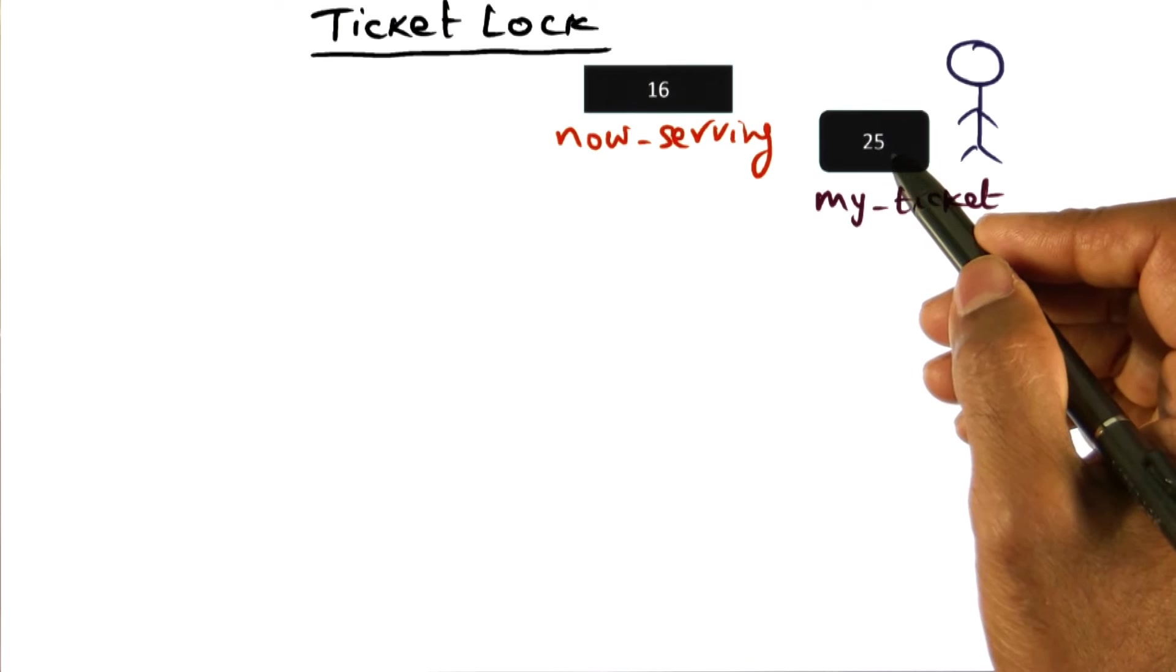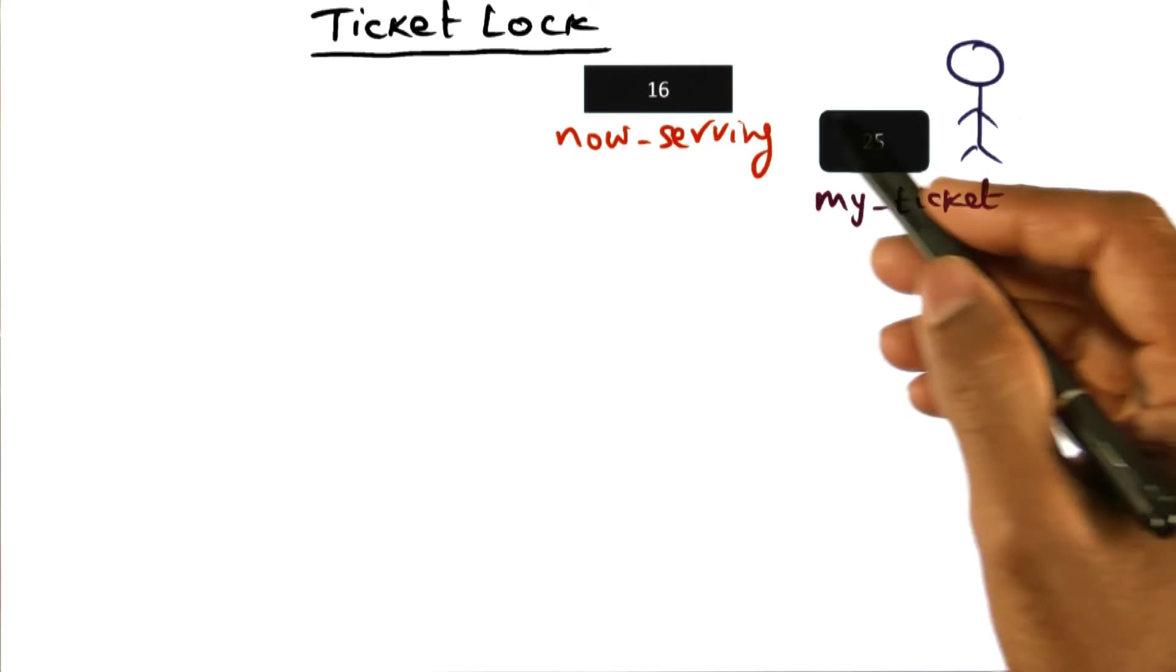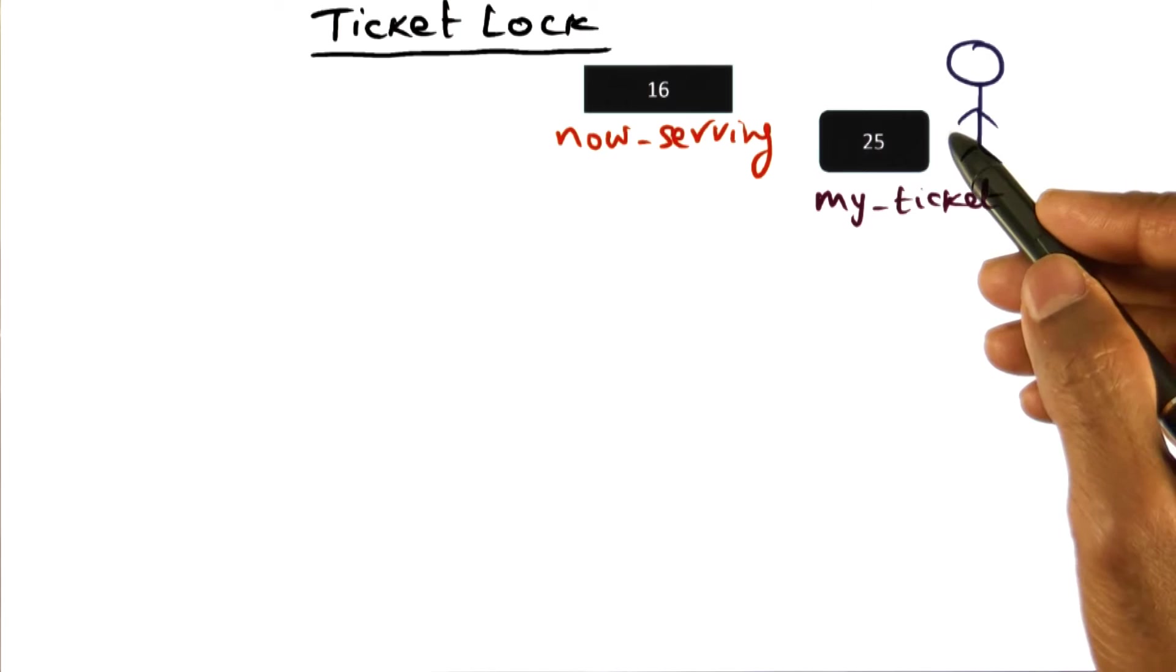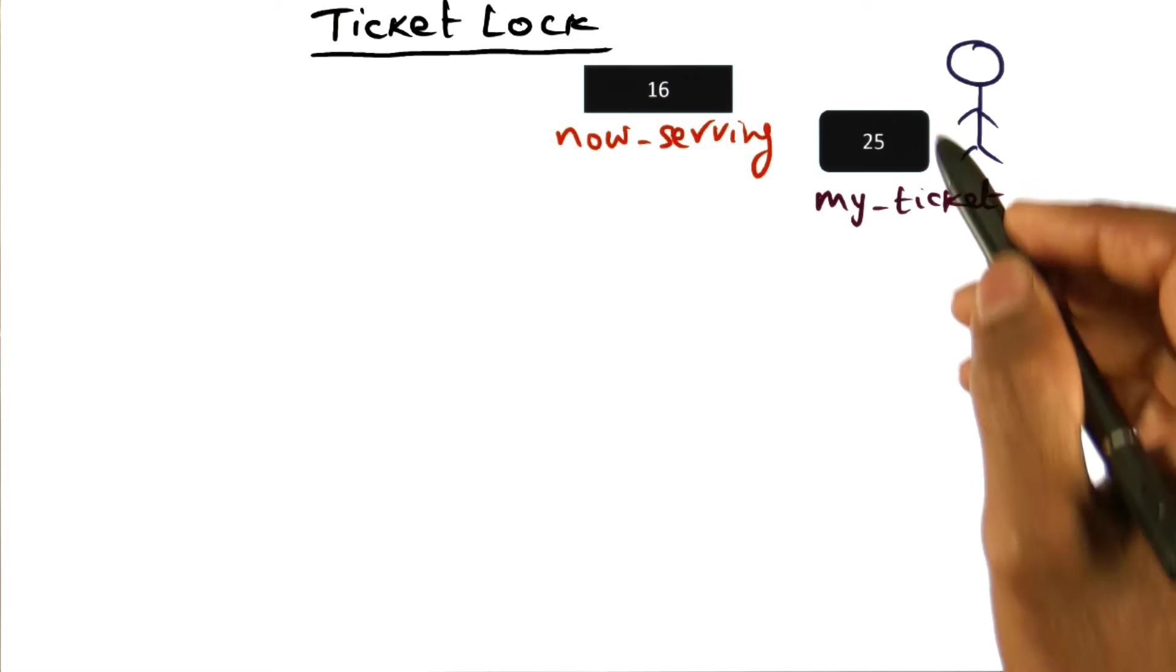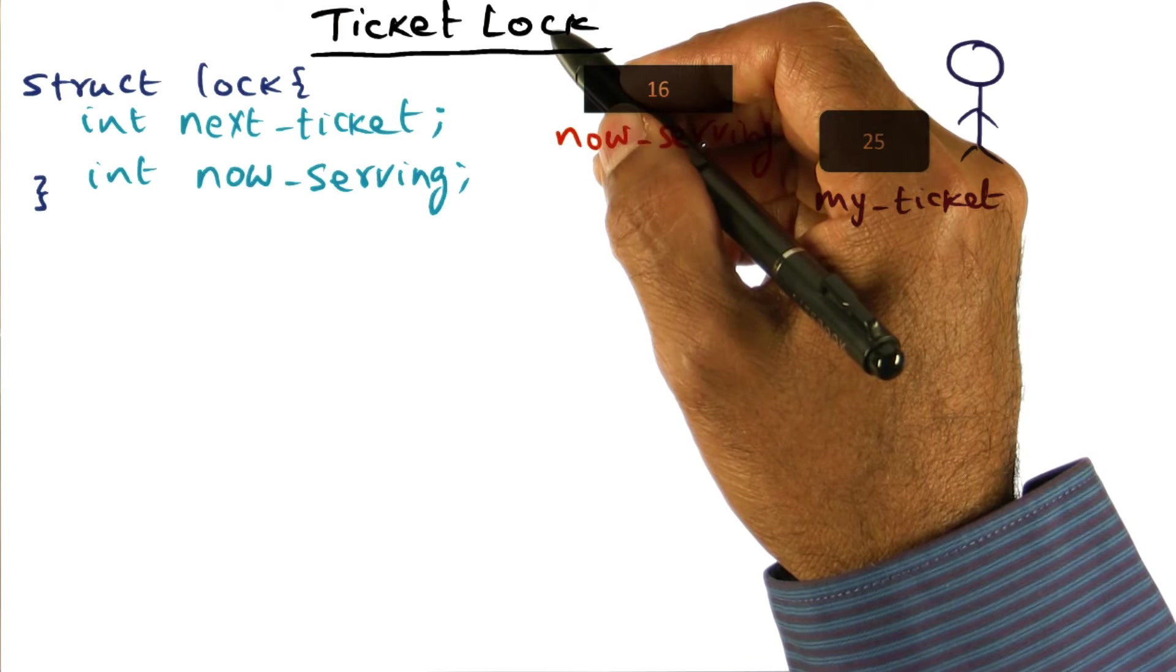And if I know that there are at least nine people ahead of me who need to be served before my turn comes up. And by similar argument, if people come after me, I know that they're not going to get served before me. That's the basic idea that we're going to use in this ticket lock algorithm.